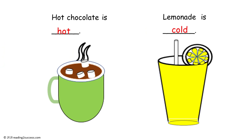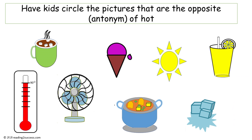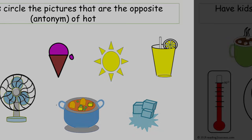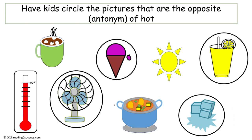Now have kids look at our third example of opposites: hot and cold. Hot chocolate is hot and lemonade is cold. Now have kids circle the pictures that are the opposite, the antonym of hot — so they are looking for things that are cold. The pictures that show things that are cold are ice cream, lemonade, a fan, and ice cubes.